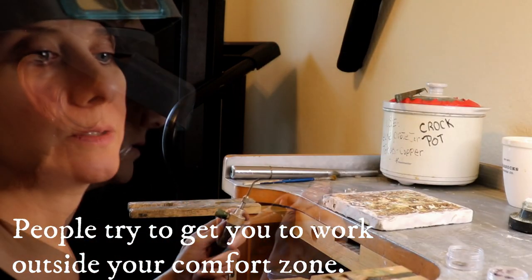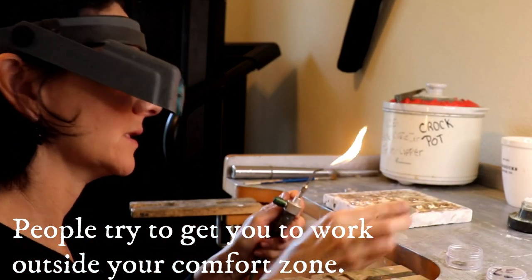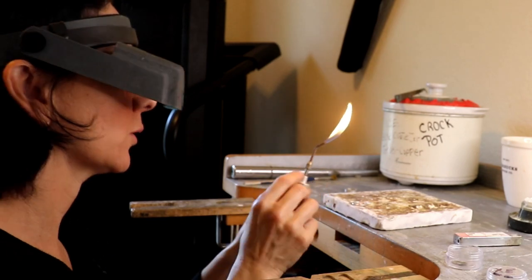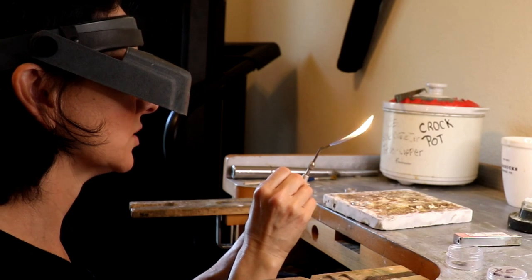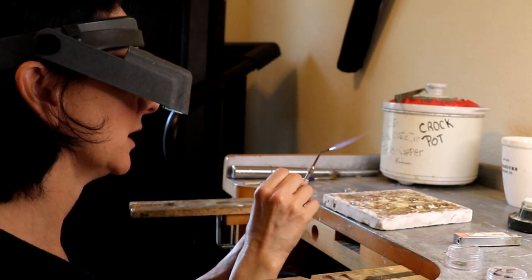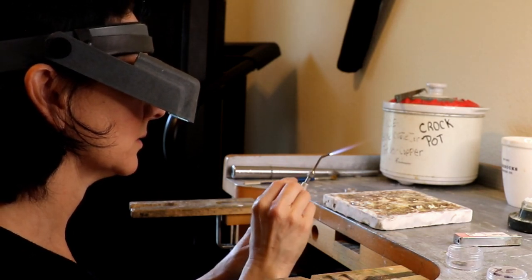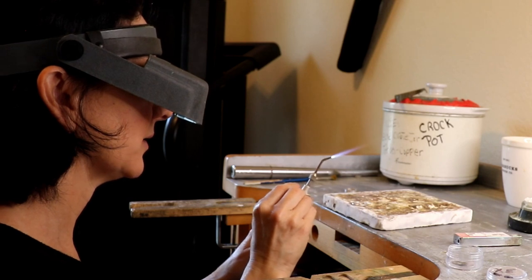Turning on the propane first. This is a Smith Little Torch if you were wondering. And it's got propane here and oxygen on this side. And the oxygen makes that propane burn. It's very hot. There you go. Go with a little bit of a fluffier flame.